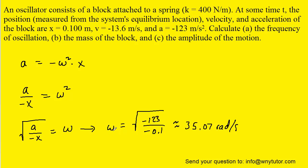And when we calculate that, we get a value of approximately 35.07 radians per second. And the reason that we wanted to find the angular velocity of the block is that because there's a nice relationship between it and the frequency. And that relationship is displayed right here, so all we have to do is plug in the value we just calculated divided by 2π.